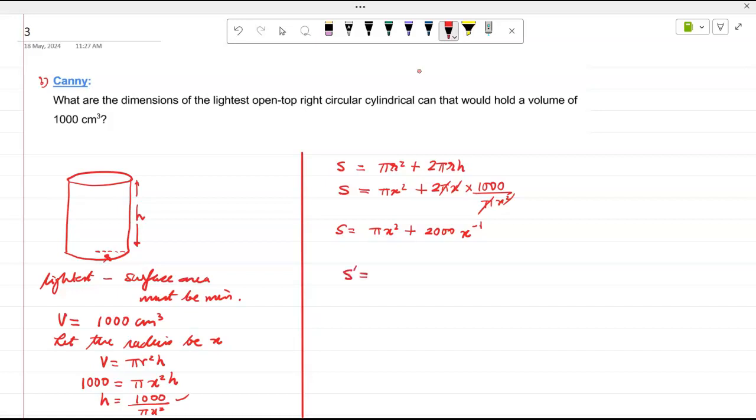Two pi x plus minus 2000 x to the negative 2. Is it equal to zero? Yeah.